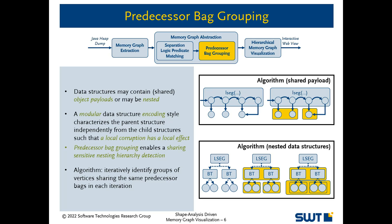The top right example resembles a valid LSEG list segment with a shared payload. The first two payload objects share the same predecessor bag containing the abstract vertex, whereas the predecessor bag for the last object differs because it contains the abstract vertex twice. Note that using bags instead of sets is key to identifying the sharing. The bottom right example resembles a parentless LSEG structure with child binary trees containing a single object as payload. Here we first identify that both binary tree instances can be summarized, as well as the payload objects of each respective tree. Finally, we identify that the previously summarized payload objects can be summarized once more.